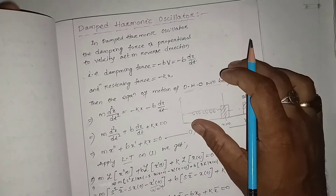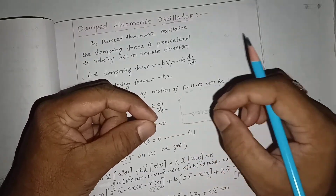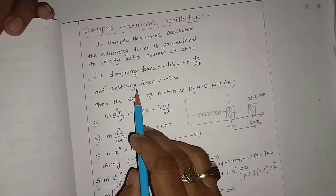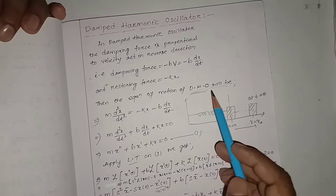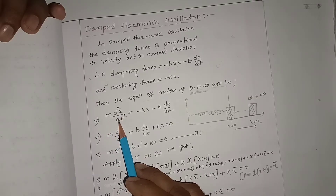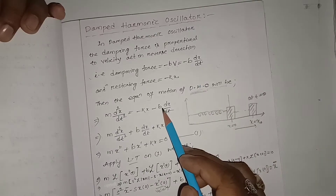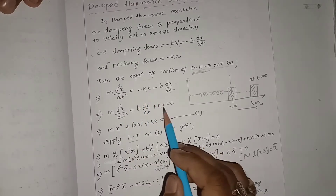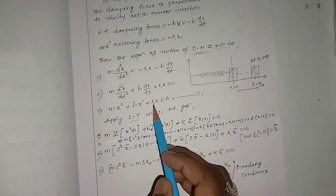As much as I drag the spring, that much energy is stored and the restoring force increases, trying to restore its mean position. So restoring force equals minus kx. The total force gives the differential equation: m·(d²x/dt²) = -kx - b·(dx/dt), which can be rewritten as m·(d²x/dt²) + b·(dx/dt) + kx = 0, or in shorthand: x'' + b·x' + kx = 0. This is equation number one.